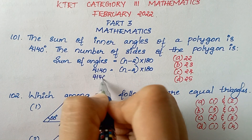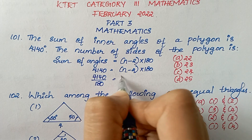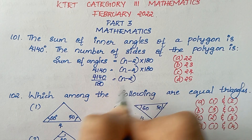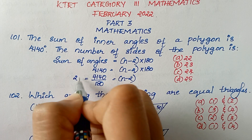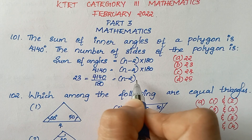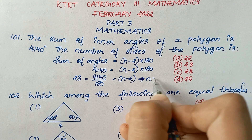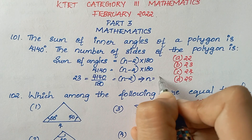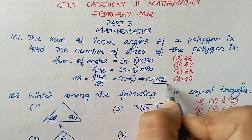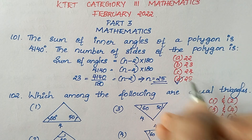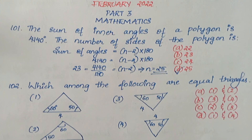4140 divided by 180 equals n-2, which gives us 23. So n = 23 + 2 = 25. Option D is the right answer. We move on to the next question.